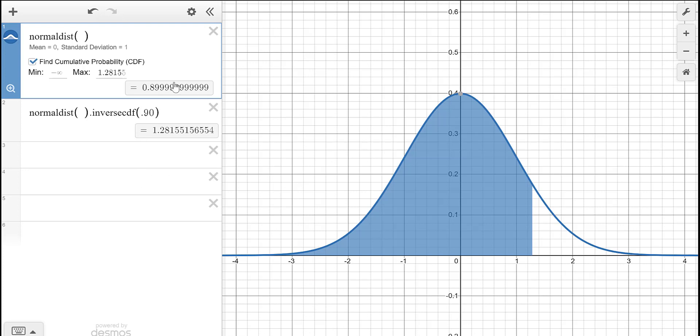And then you can see it's giving me the same thing. So this 0.899999, that's 90 percent. So this tells me this is the z-score that would correspond to 90% being to the left.